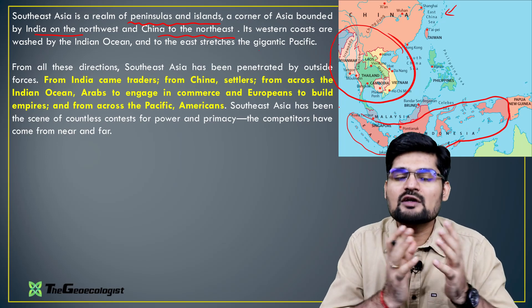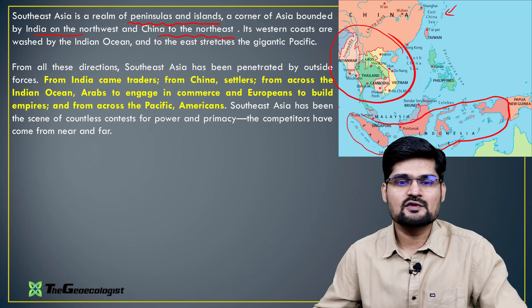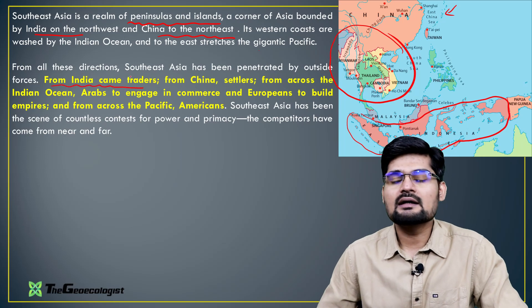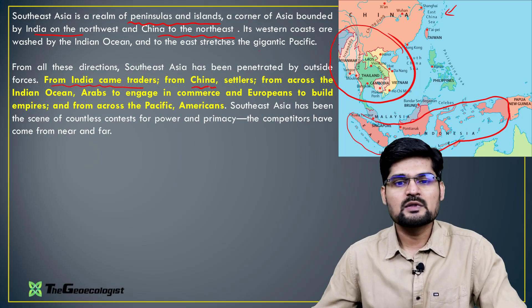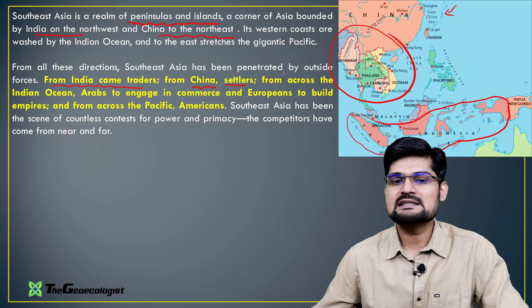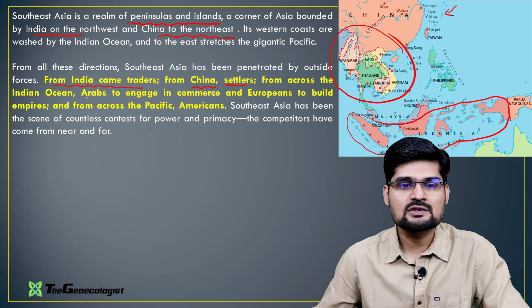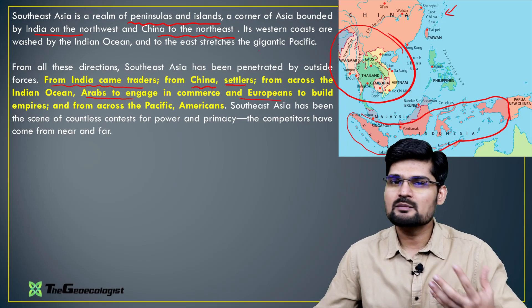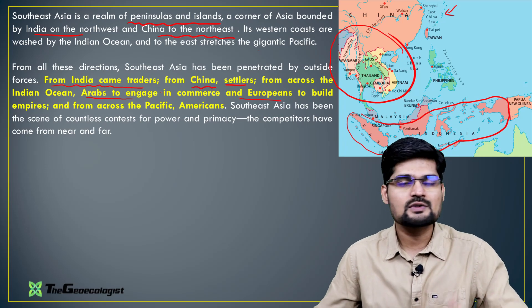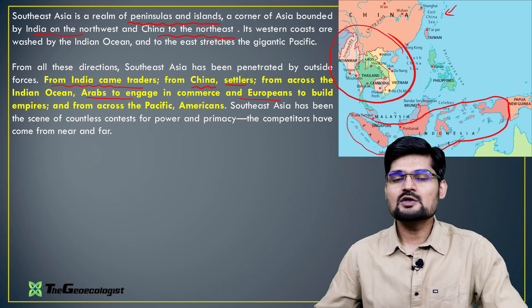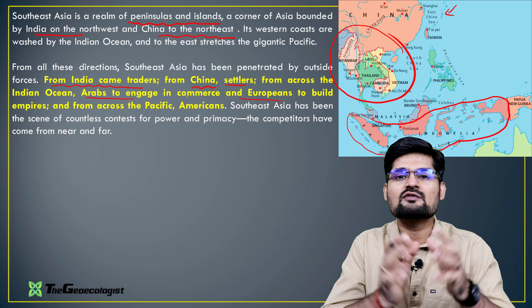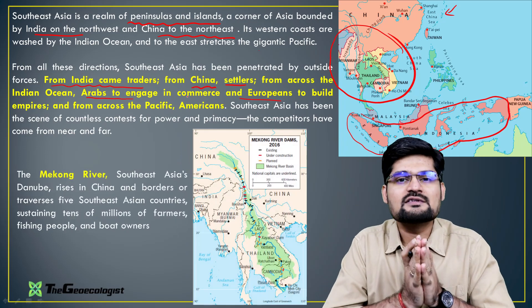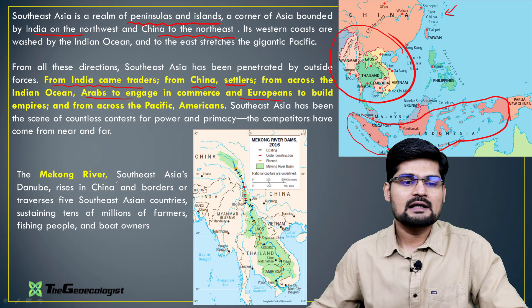Looking into the development of human geography in this region, there are people coming from India as traders who settled here, people from China also settled, and then from the Indian Ocean region, Arabs and people from Europe who developed commercial aspects, travel, tourism and other industries. So basically this is an amalgamation of world cultures in this particular region.